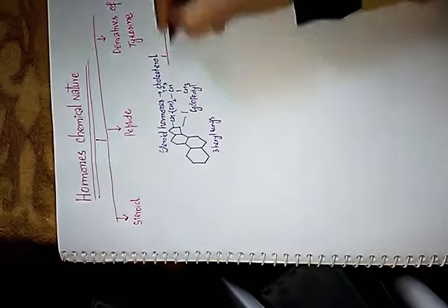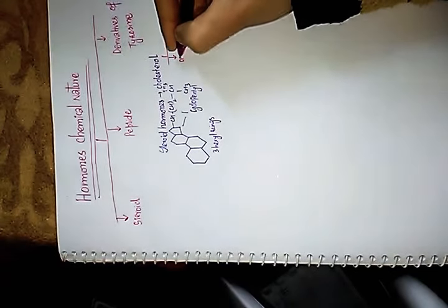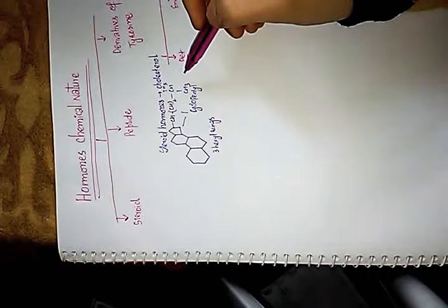Where do we get cholesterol? We get cholesterol mainly from two sources: number one, diet; and number two, endogenous secretion. The liver is the main site where cholesterol gets synthesized endogenously.